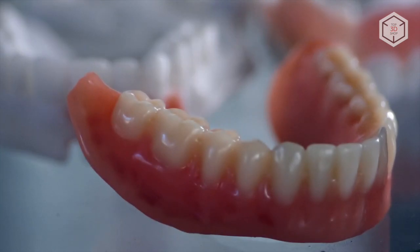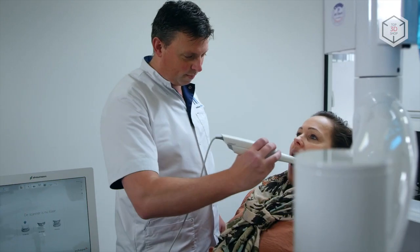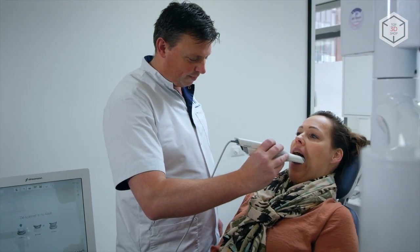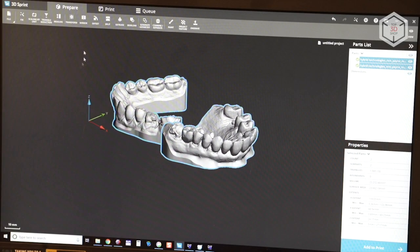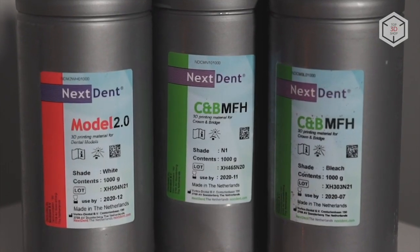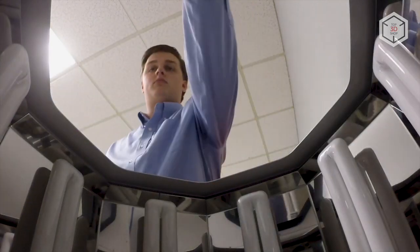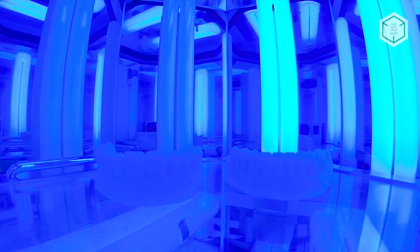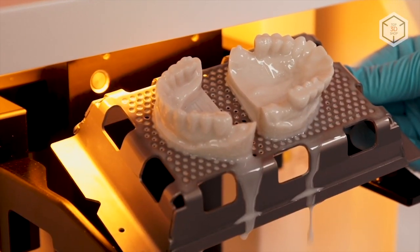NextDent 5100 can perform as part of a complete solution for digital dental workflow which includes intraoral scanning, 3D Sprint software, a variety of dental resins, the LC3D mixer, and LC3D print box UV post-curing unit. The machine has a build volume of 124 by 70 by 196 millimeters and a fairly high print speed.